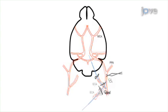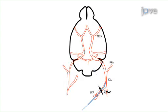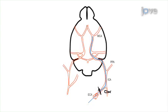Then, the ECA is inverted to introduce the monofilament into the ICA until it occludes the base of the middle cerebral artery.